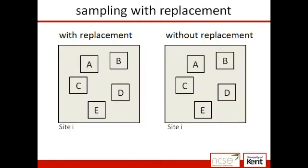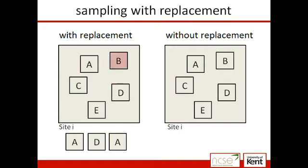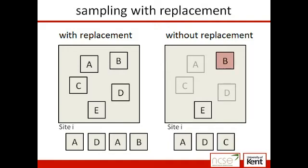They looked at two possibilities: sampling with and without replacement. Under sampling with replacement, previously surveyed subunits have the same chance of being surveyed as other subunits in the site, and therefore each subunit may be surveyed more than once. On the other hand, under sampling without replacement, subunits can only be surveyed once. In their paper, Kendall and White concluded that the best strategy to use was to carry out sampling with replacement.